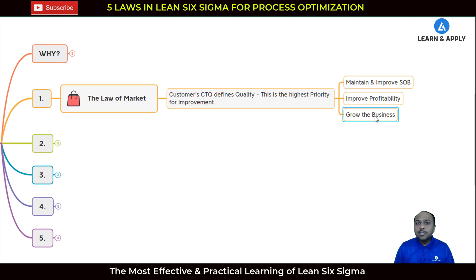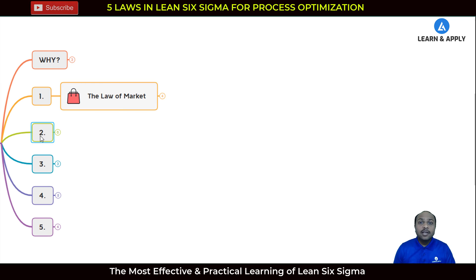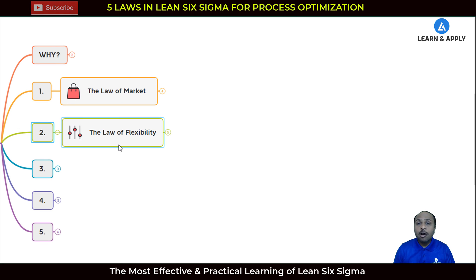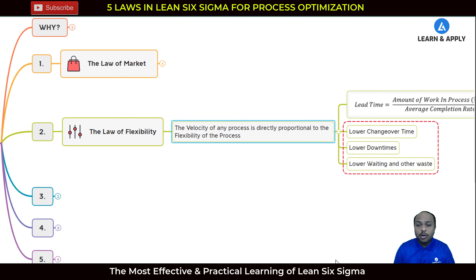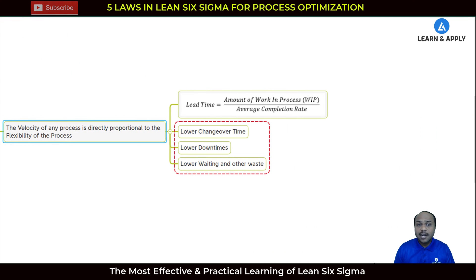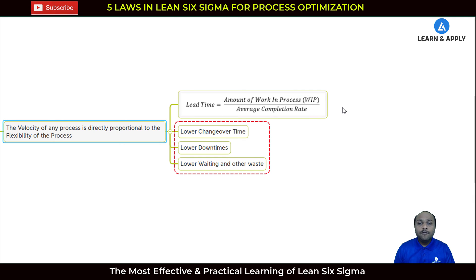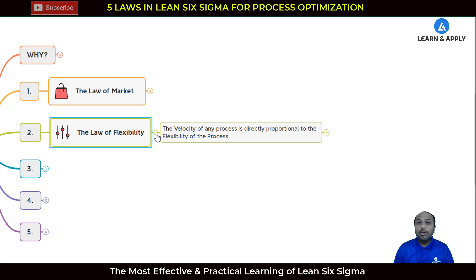The second law in Lean Six Sigma for process optimization is the law of flexibility. The velocity of any process is directly proportional to the flexibility of the process. Here we apply Little's Law: lead time equals amount of work in process divided by the average completion rate. To improve velocity and lead time, we need to reduce work in process and improve completion rates. This law consists of lower changeover time, lower downtimes, and lower waiting and other waste.